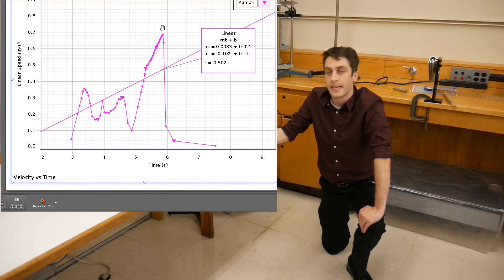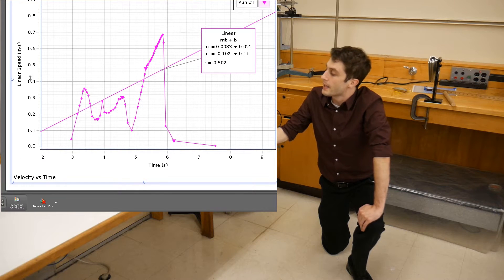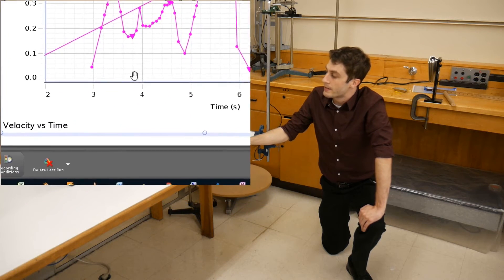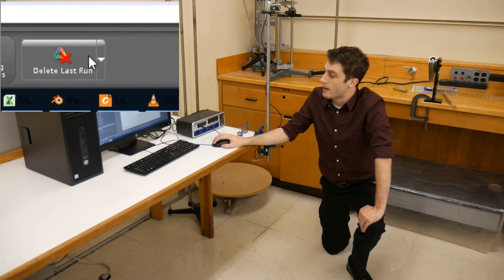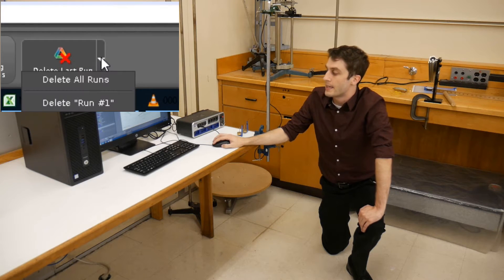Once it finishes loading, there may be some data already on the screen. I'd like you to delete that. Go down to Delete Last Run, click the arrow just to the right of it, and then click Delete All Runs.